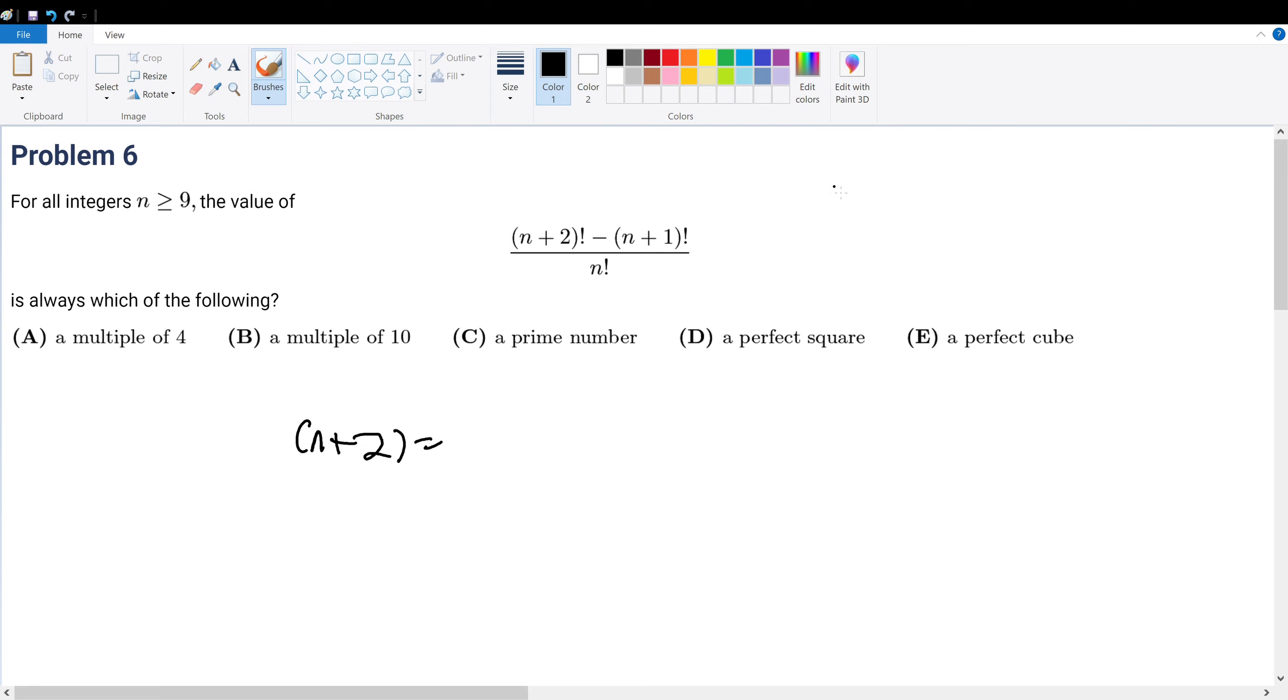Well, what does it mean for a factorial? Factorial is like 4 factorial, for instance—it's 4 times 3 times 2. So it's n, n minus 1, n minus 2, etc. So this goes all the way into 1.